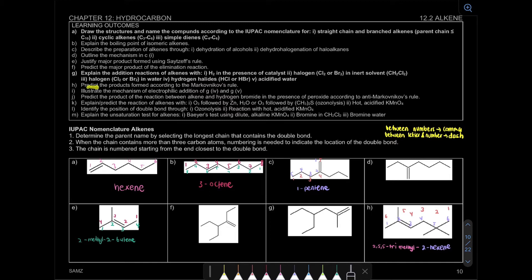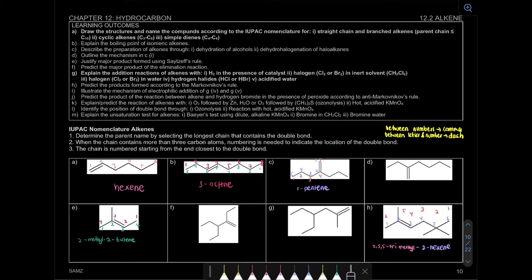Next we're going to predict the products formed according to the Markovnikov rule, and then we're going to illustrate the mechanism of the addition reaction. The last one is we're going to predict the product of the reaction between alkene with halogen bromide in the presence of peroxide.